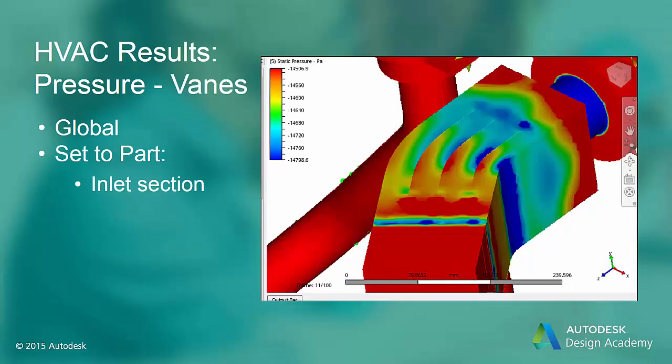To see the effects of the shell parts that form the guide vanes near the inlet, right-click on the pressure color legend and choose 'Set to Part', then click any of the parts or volumes near the guide vanes. This highlights the pressure distribution in that region. You can see that the pressure is higher on the underside of the shells than on the top, since the underside is where the flow impinges on the vanes.